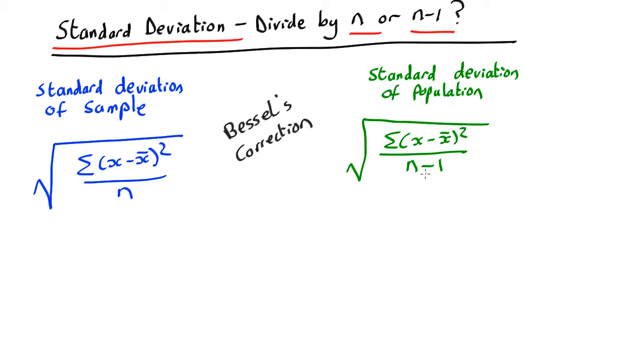In both cases, the way you work out the standard deviation is you take every value, subtract off the mean, square it. Next value, subtract off the mean, square it, add all those up, and divide by either n, which is the number of observations, or n minus 1.